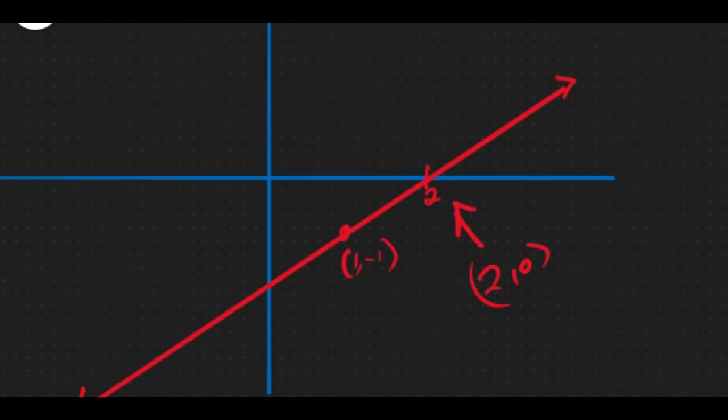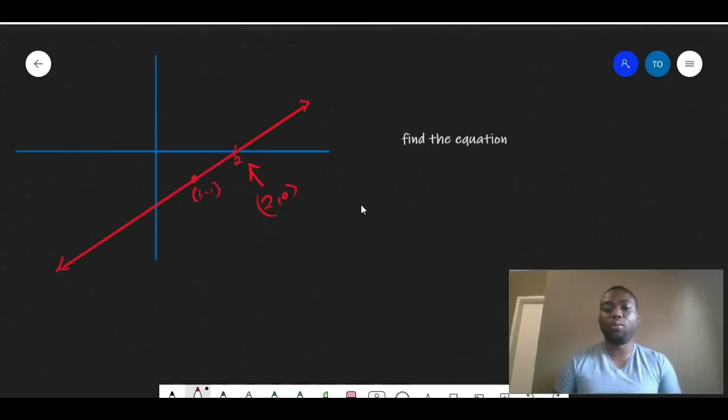The reason, like we said before, why we need two points is because we need this point to be able to get our gradient. So our gradient, we use the gradient formula, which says... Next thing we do now is to substitute.